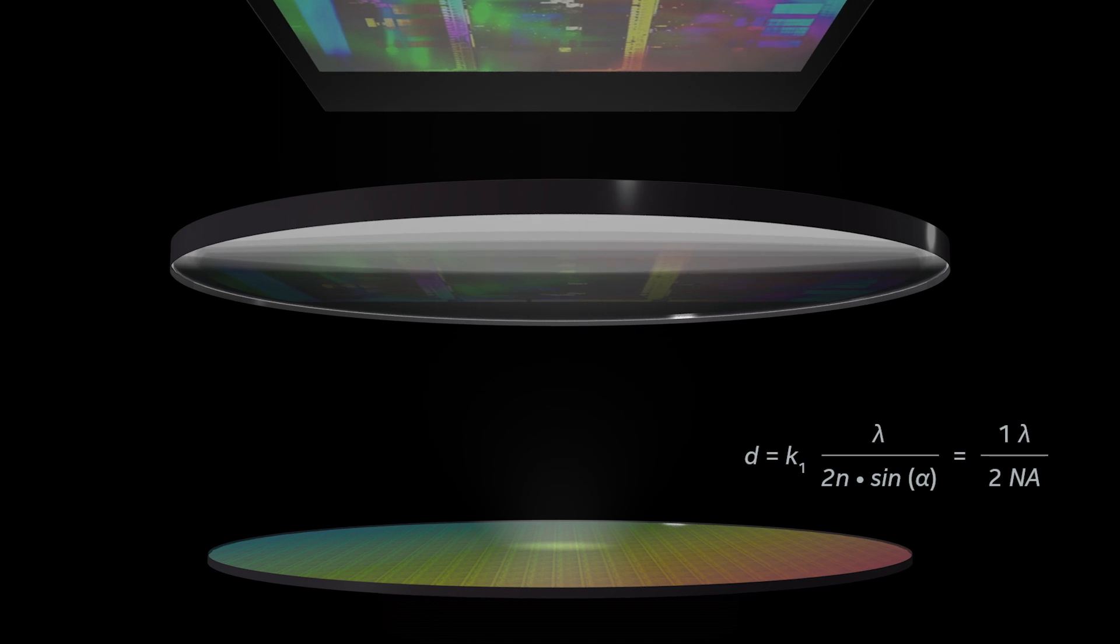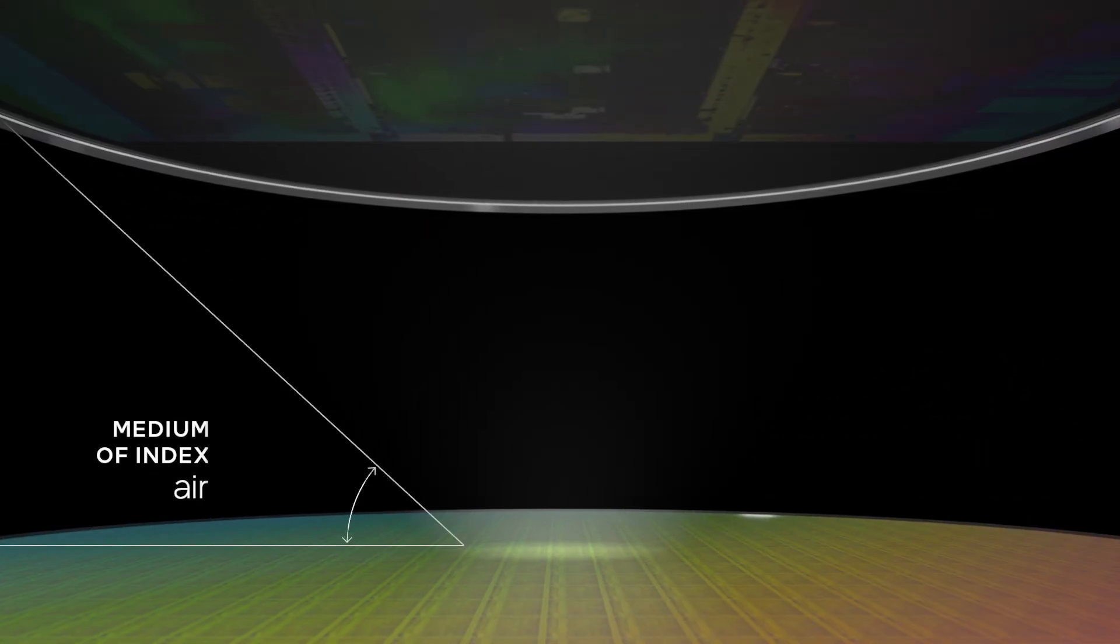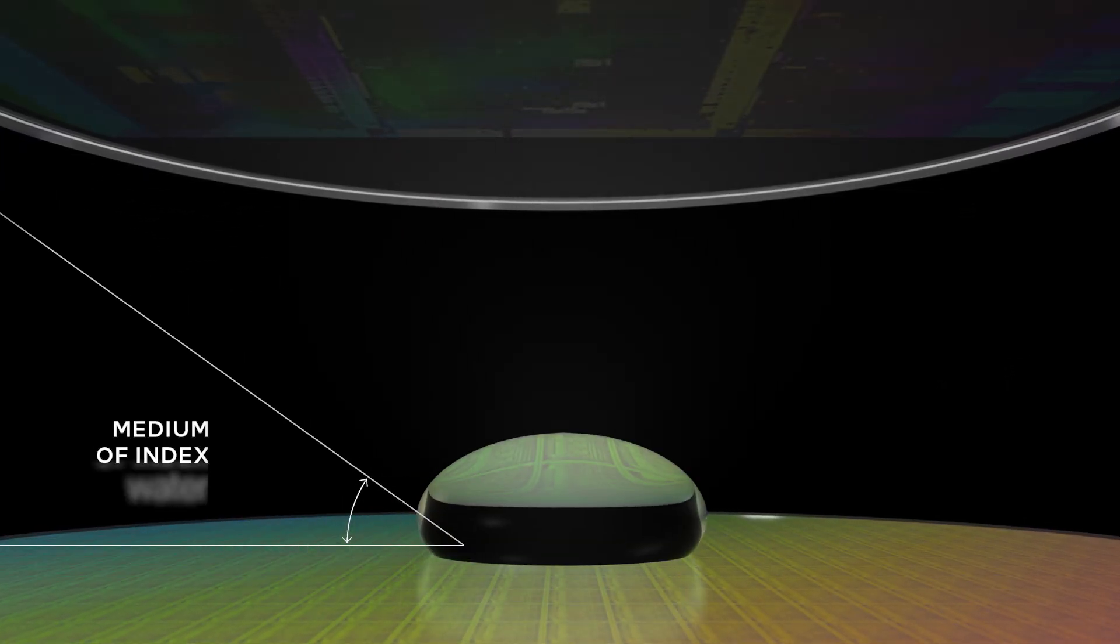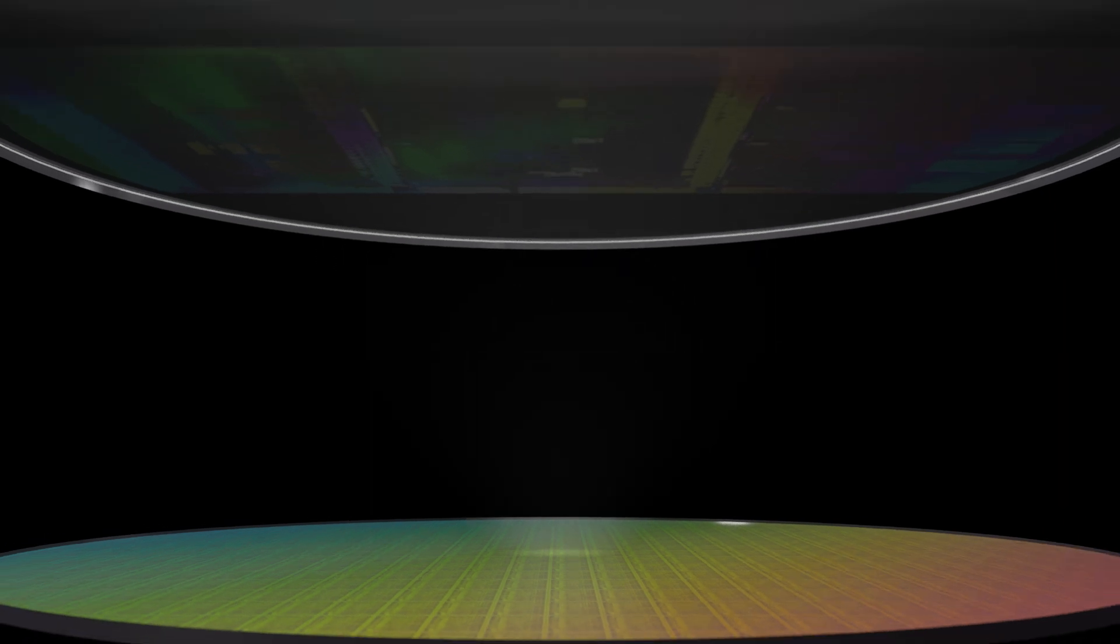By now, the laser light source wasn't able to print lines any smaller. The features were smaller than the wavelength itself. Water immersion that refracted the light allowed finer-grained printing to continue.